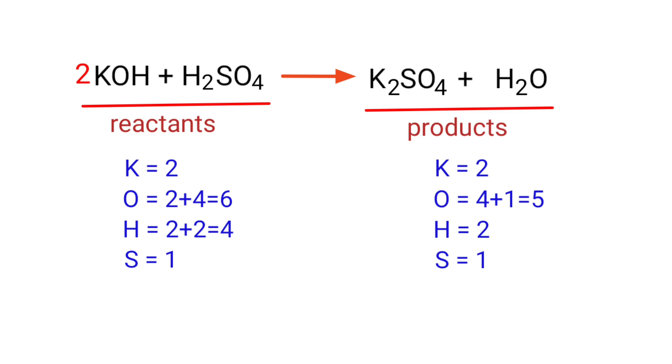The potassium atoms are balanced. Now we need to balance the hydrogen and oxygen atoms. To do this, we need to put a coefficient of 2 in front of H2O.